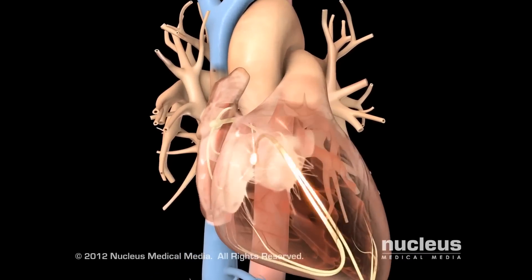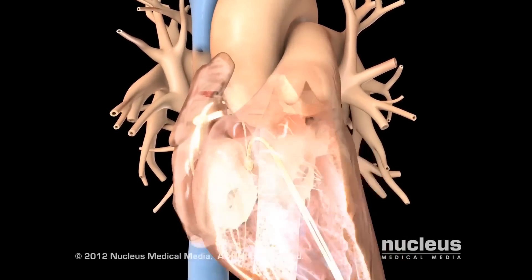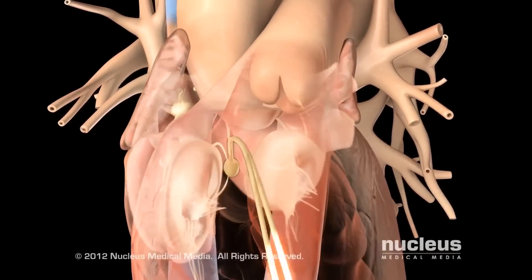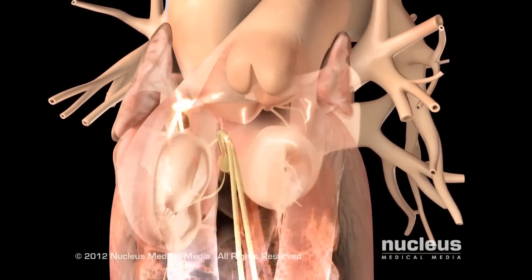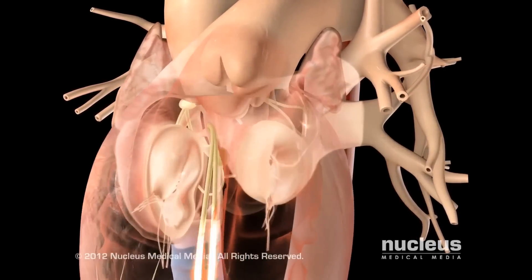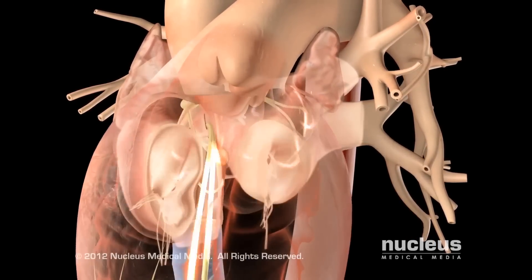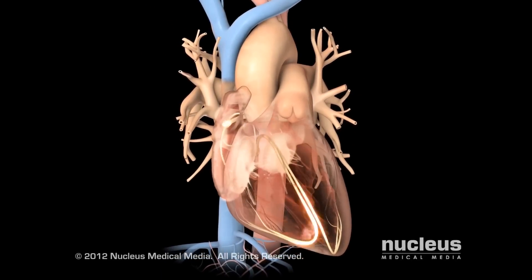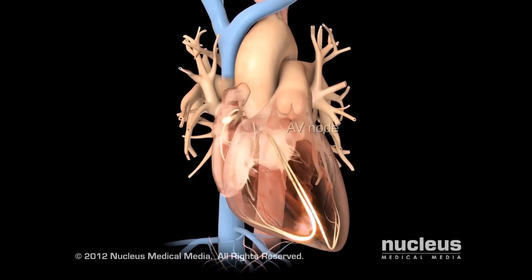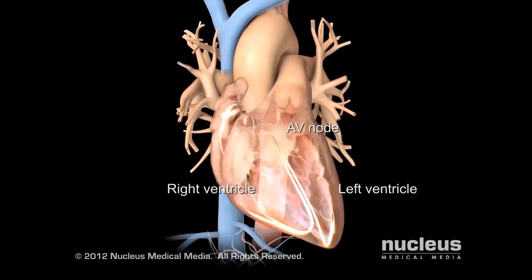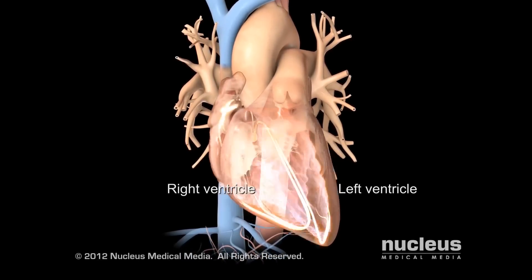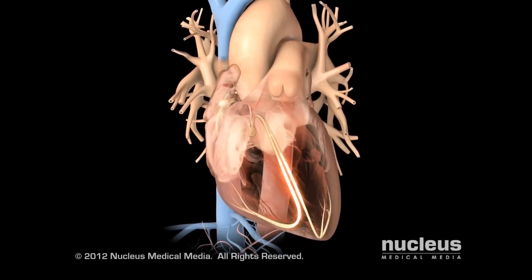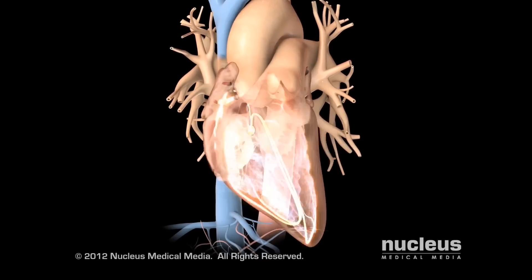In atrial fibrillation, the electrical signals originate from unusual locations in the atria and nearby pulmonary veins. These abnormal signals travel through the atria haphazardly, causing the atria to contract in a jumble of rapid quivers and twitches. The signals bombard the AV node, causing the ventricles to contract rapidly. Even at a faster pace, the ventricular contractions cannot keep up with the rapid atrial contractions, resulting in an uncoordinated heartbeat.